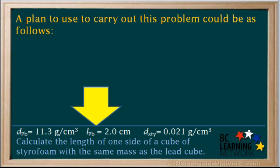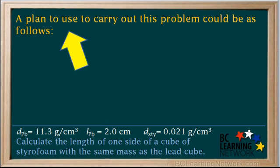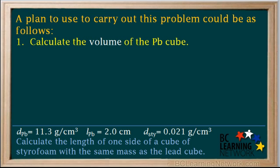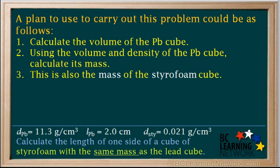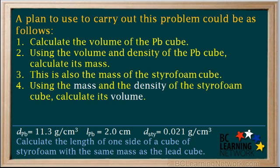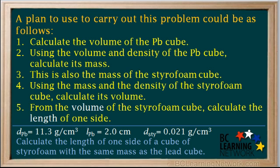The given information and the question is summarized at the bottom. A plan to carry out this problem: In step one, calculate the volume of the lead cube using the length of one side. In step two, using the volume and the density of the lead cube, calculate its mass. This is also the mass of the styrofoam cube, as stated in the question — the two cubes have the same mass. In step four, using the mass and the density of the styrofoam cube, calculate its volume. And finally, in step five, knowing the volume of the styrofoam cube, calculate the length of one side.